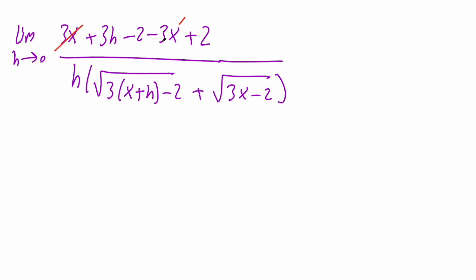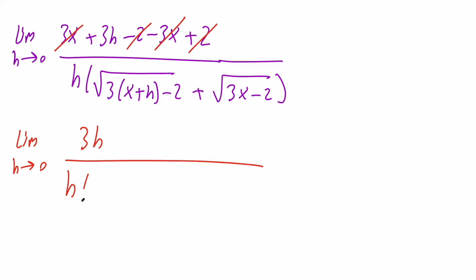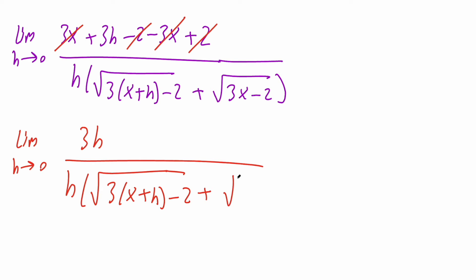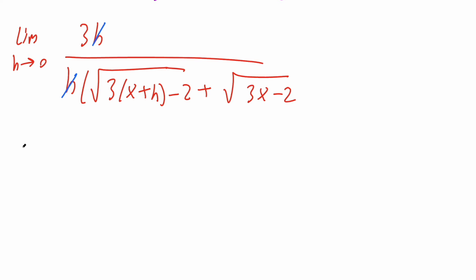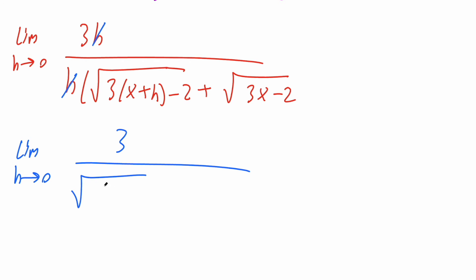The three x and the negative three x cancel, and the negative two and the positive two also cancel. We can rewrite it: the limit as h approaches zero of three h divided by the square root of three(x plus h) minus two, plus the square root of three x minus two. Now the h cancels, and we can rewrite it one more time: the limit as h approaches zero of three divided by the square root of three(x plus h) minus two, plus the square root of three x minus two.